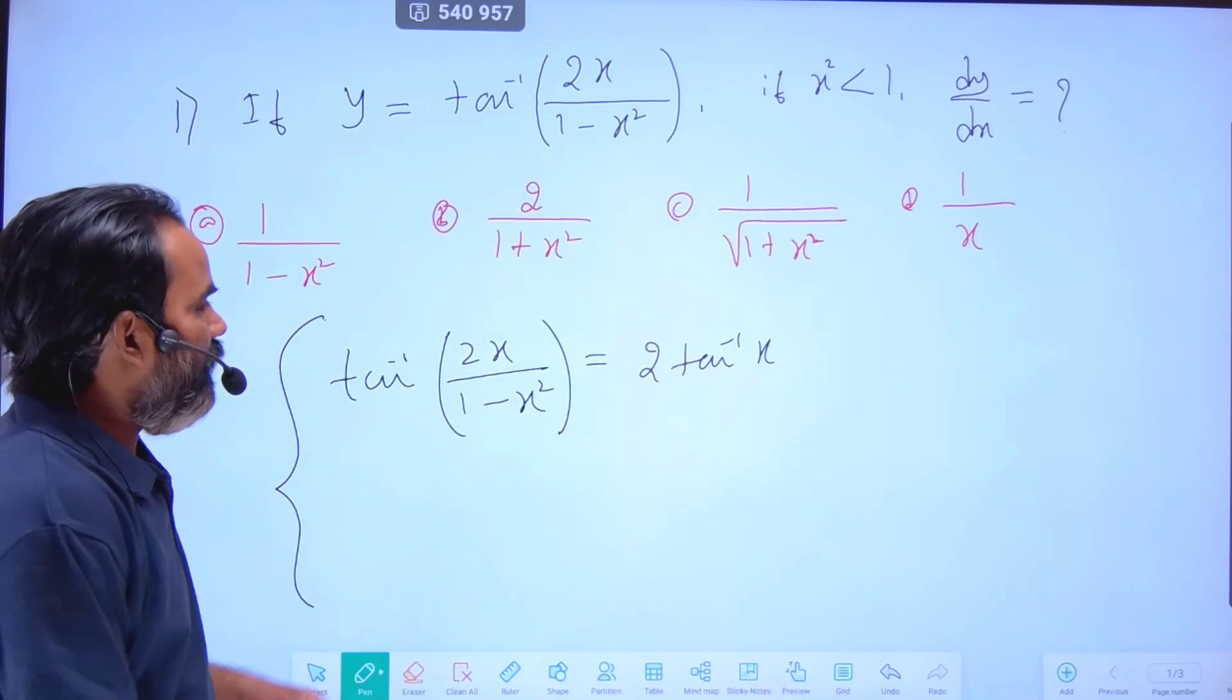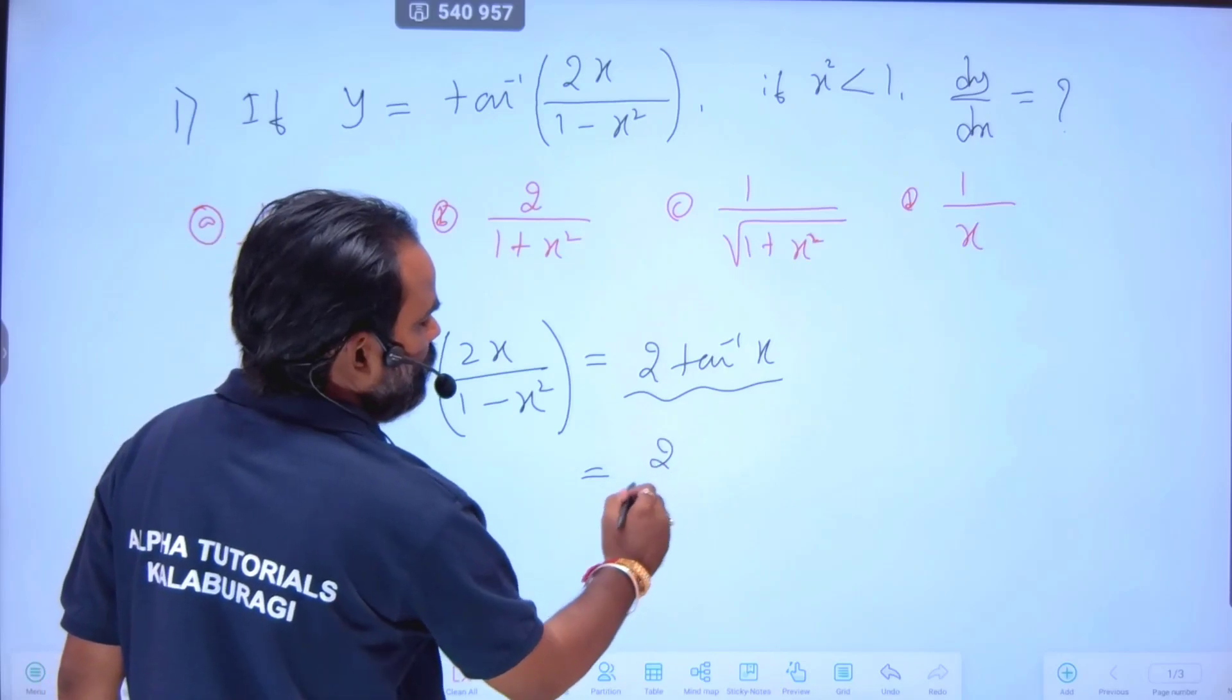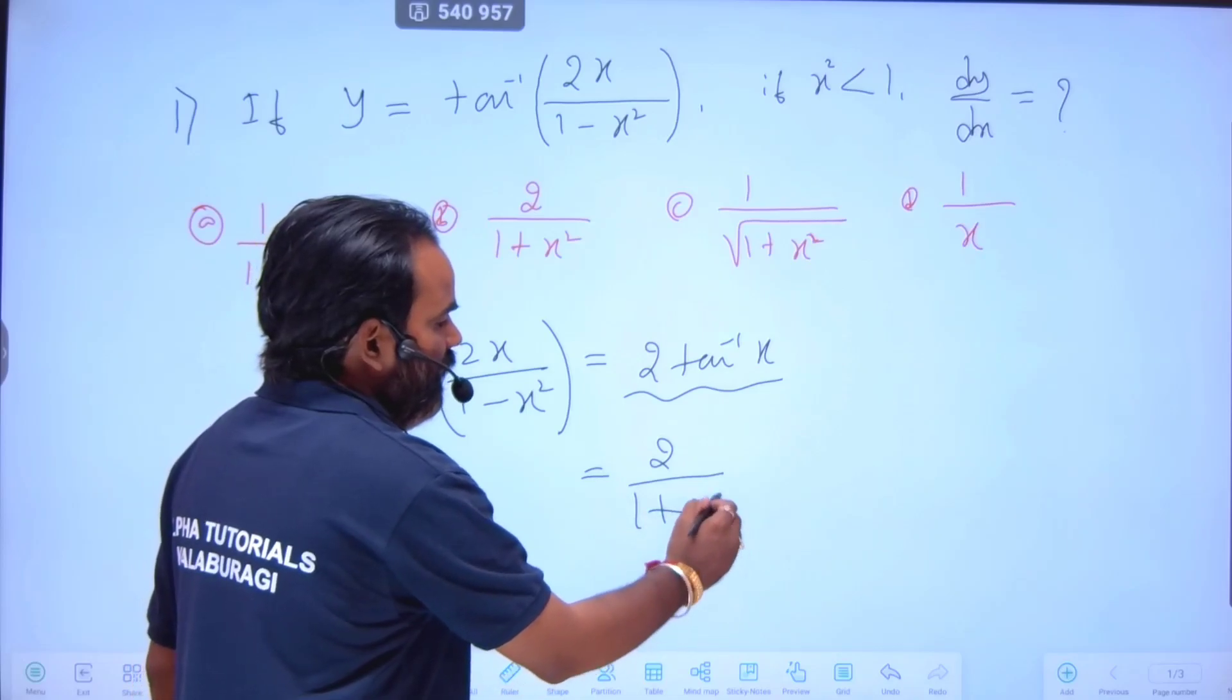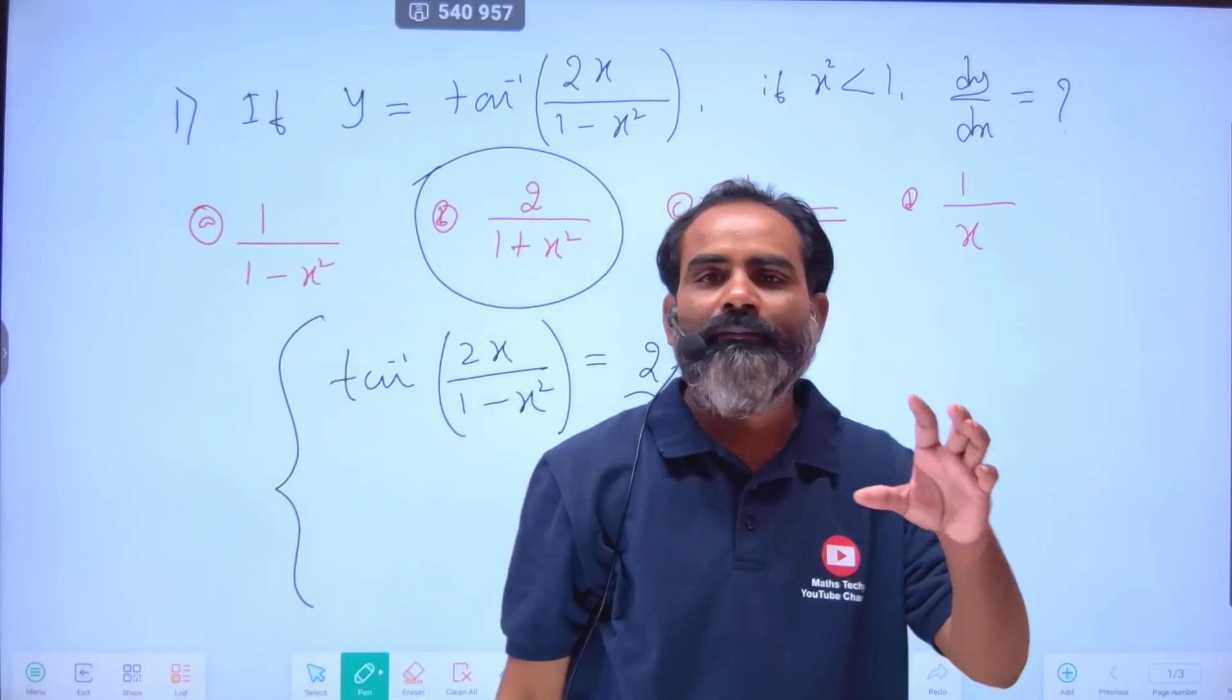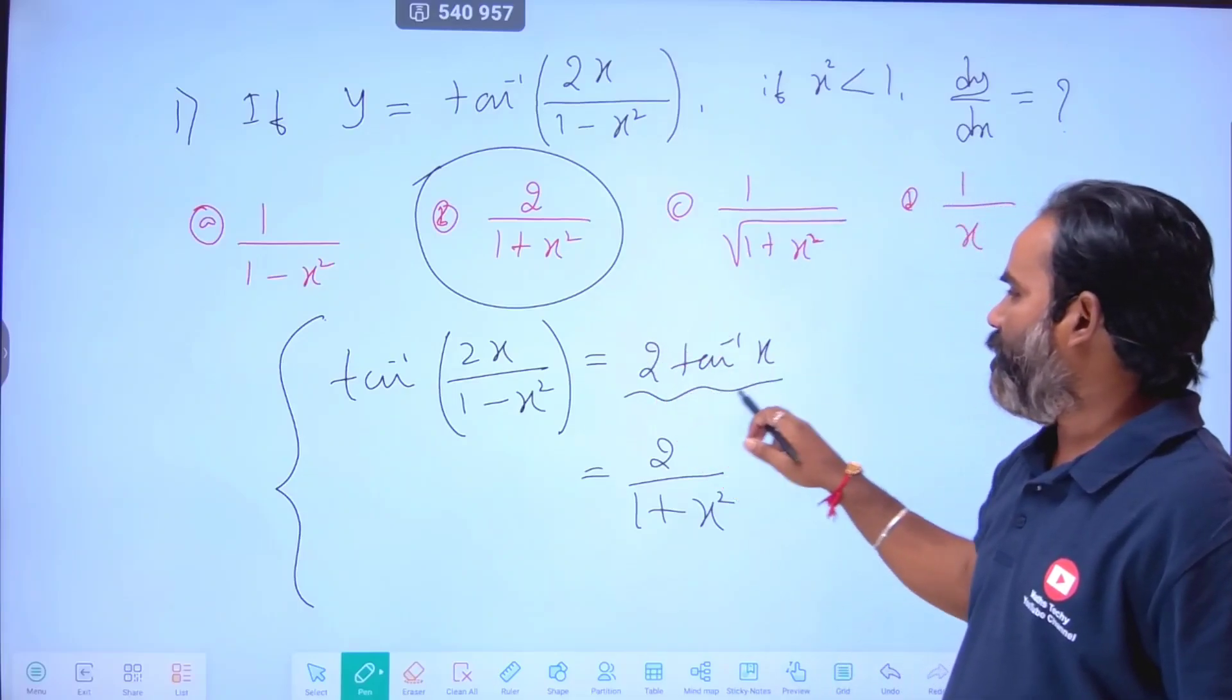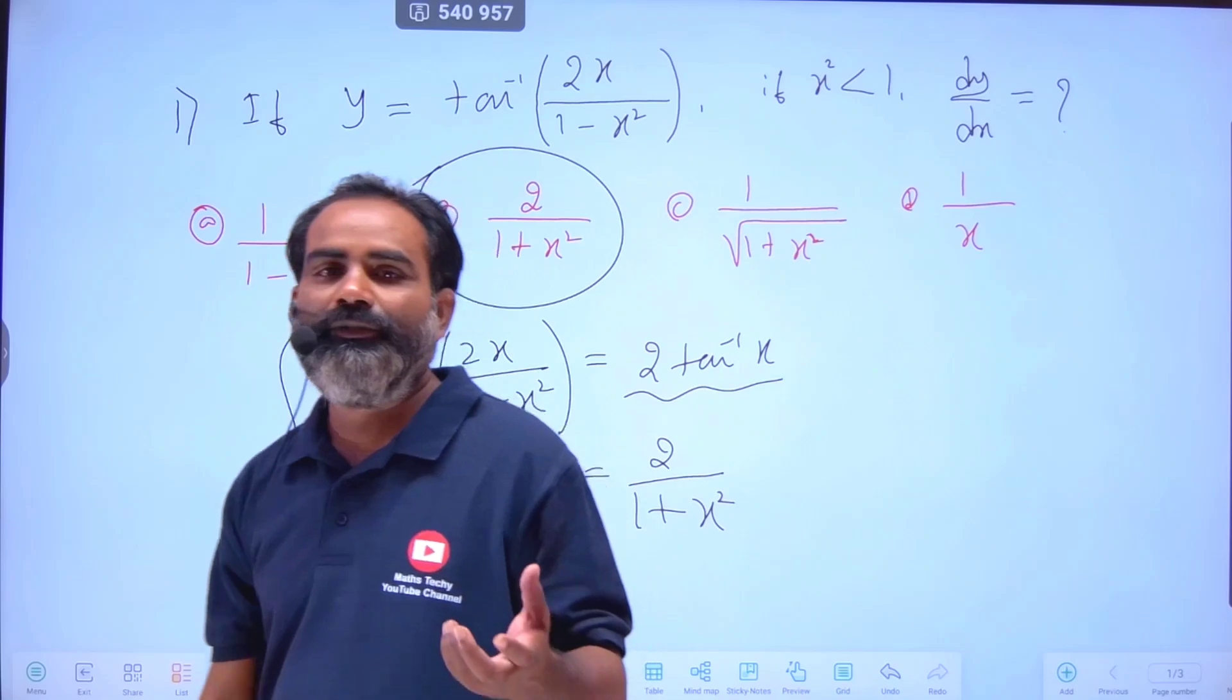So this is the differentiation. We know that 2 is a constant. What is the differentiation of tan inverse x? It's 1/(1+x²). So option B is correct. This whole thing equals 2 tan inverse x directly, so differentiation gives us that formula.